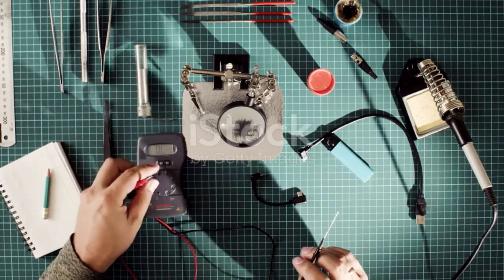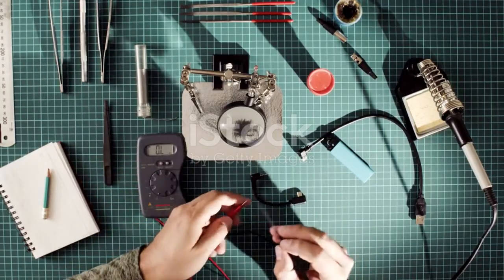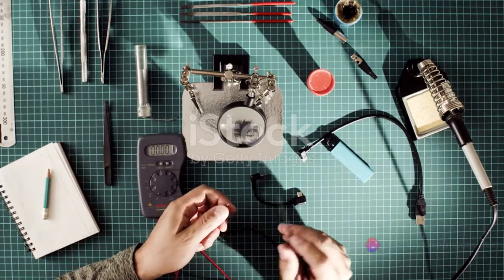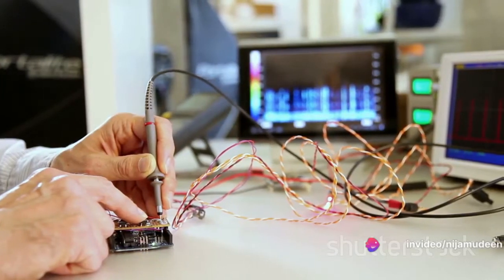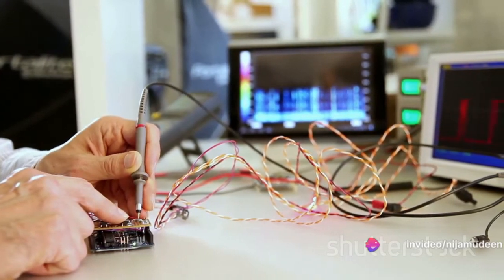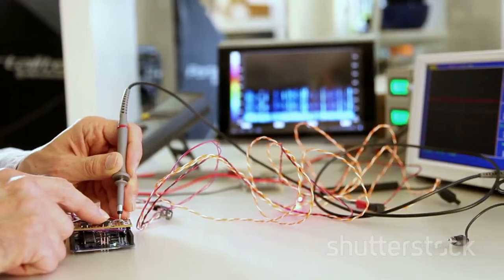First, the instrument measures the combined resistance of wire A, the RTD, and wire C. Next, it measures the resistance of wires B and C without the RTD's resistance, since wire A and B are directly connected at one end.